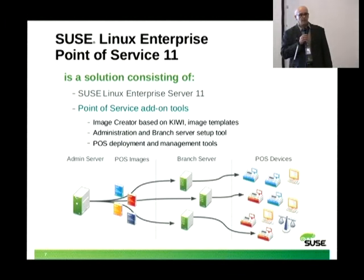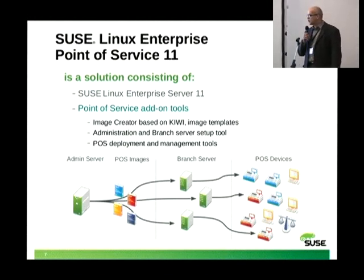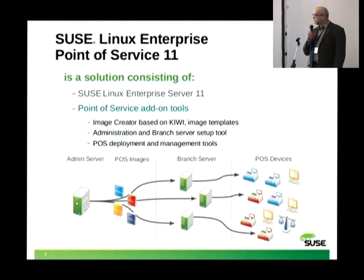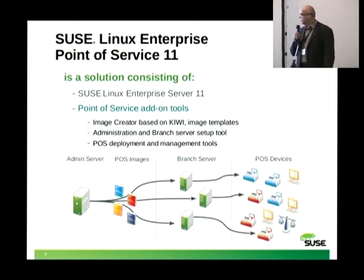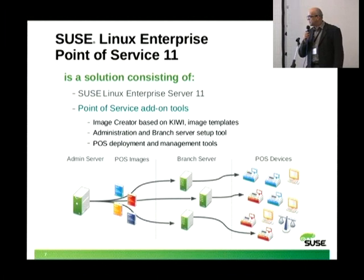Images that will be later deployed on the clients are prepared on the admin server and stored there. Once this preparation is finished, we proceed with synchronization of this configuration and the images to the branches where the branch servers are located. These branch servers are generally located in each store where the clients will run. After the branch servers have been provided with all this information, you just plug in the cash register into the branch server which via PXE deploys the system automatically and starts working.